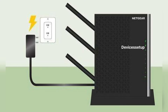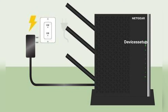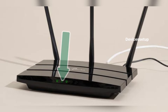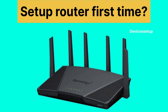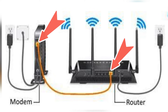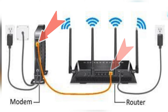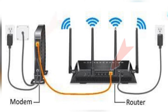To start with, make sure your router is plugged into the power source with a stable power LED. Also, if you are setting it up for the first time, connect an Ethernet cable from your modem to the WAN or internet port of the router.